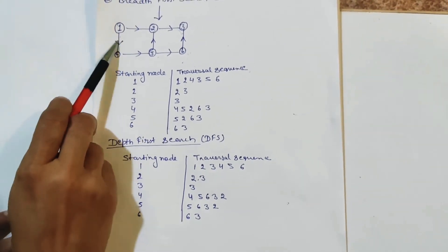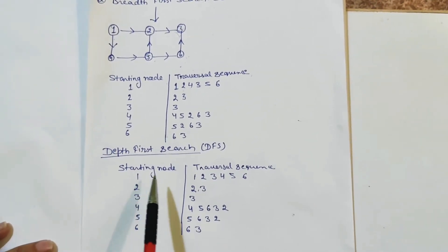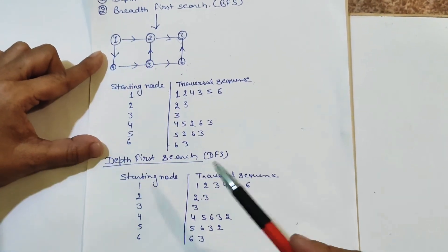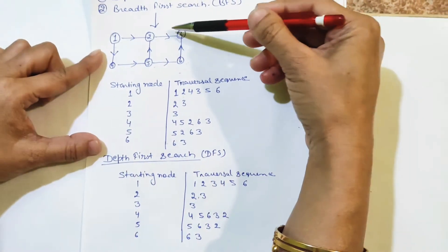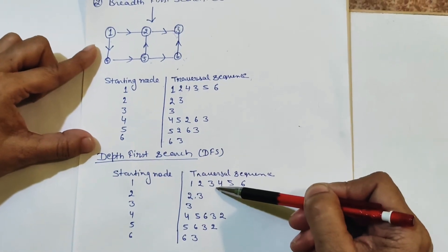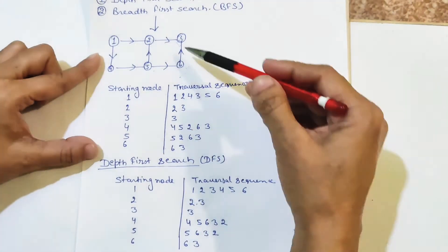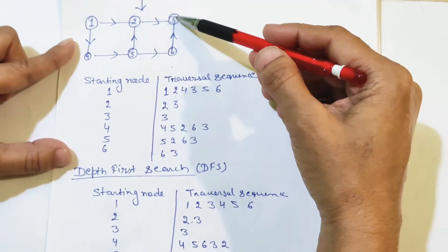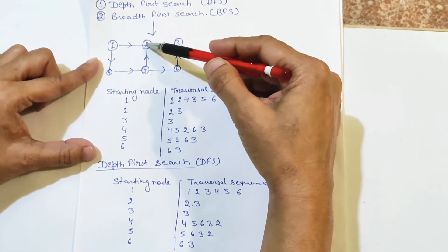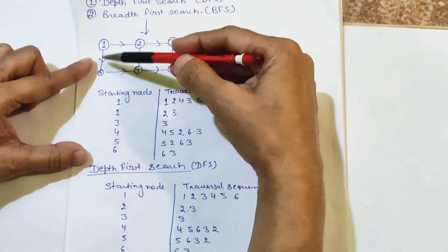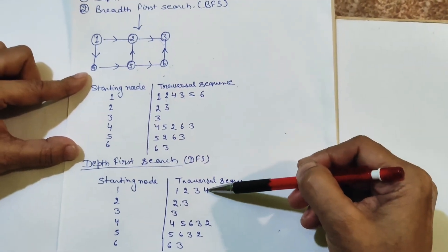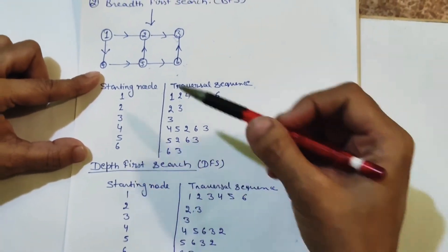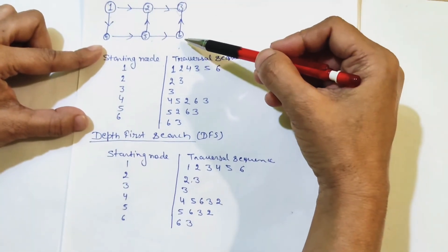Let's take the same example for DFS. From the first node, we go directly to two. Write two. Then go to three. Write three. Now three has become a dead end. From three we go back to two, then back to one. From one, where are we going? To four. So write four. From four, where do we go? Five. Write five. From five, where do we go? Six.